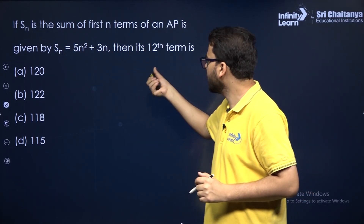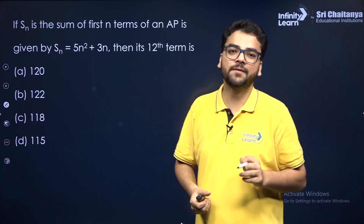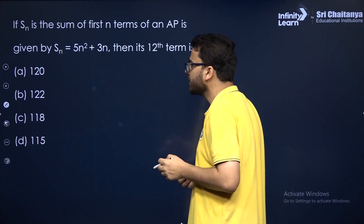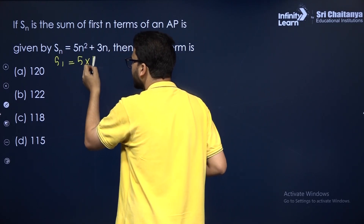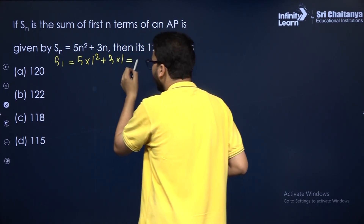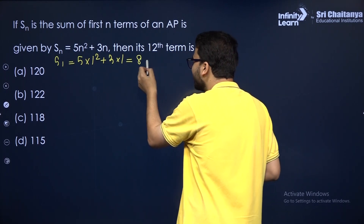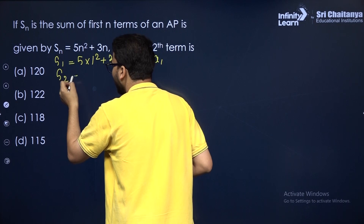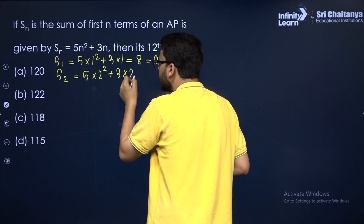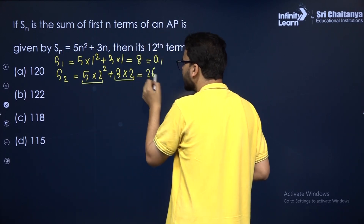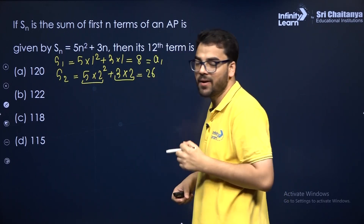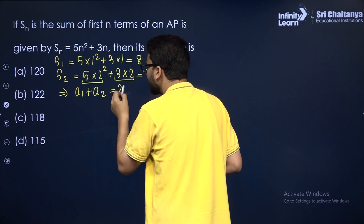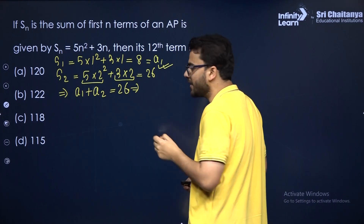Next: SN is the sum of the first N terms of an AP; find its 12th term. Put N = 1 to get S1 = 8. Since S1 is just the first term, A1 = 8. Now put N = 2: S2 = 5(4) + 6 = 26. Since S2 = A1 + A2, we get 8 + A2 = 26.